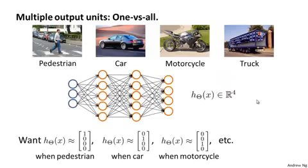The way we do multi-class classification in a neural network is essentially an extension of the one versus all method. So let's say that we have a computer vision example where instead of just trying to recognize cars, as in the original example that I started off with, let's say we're trying to recognize four categories of objects.